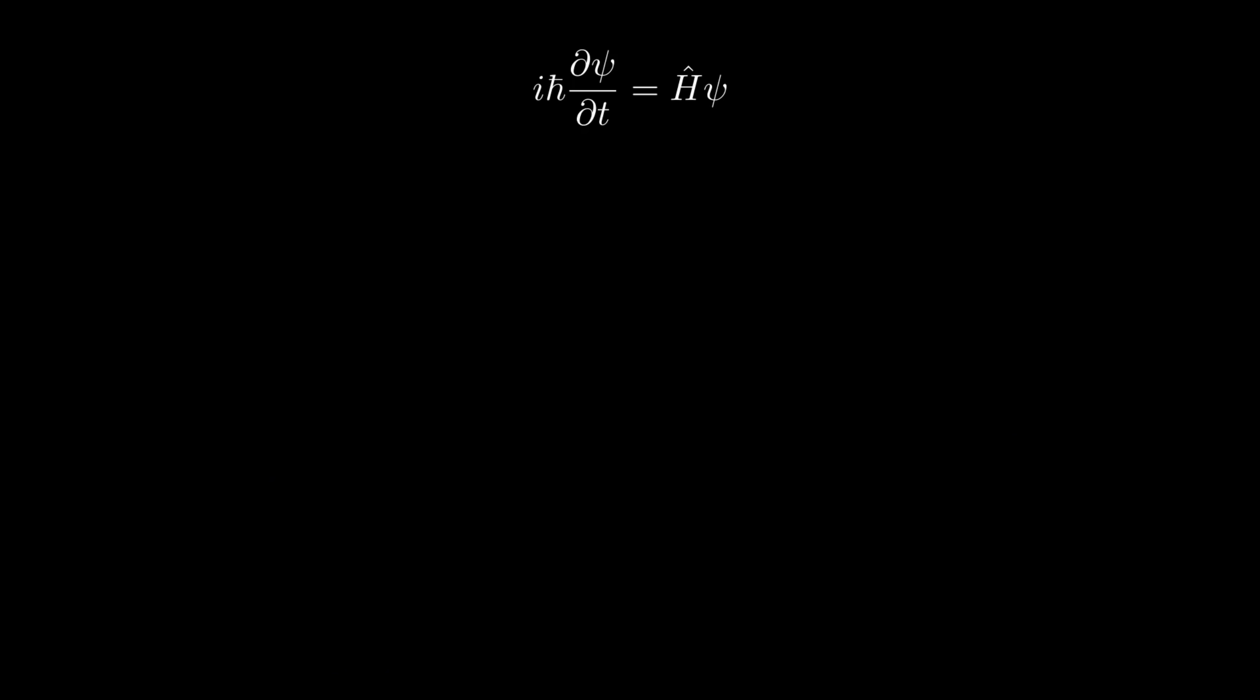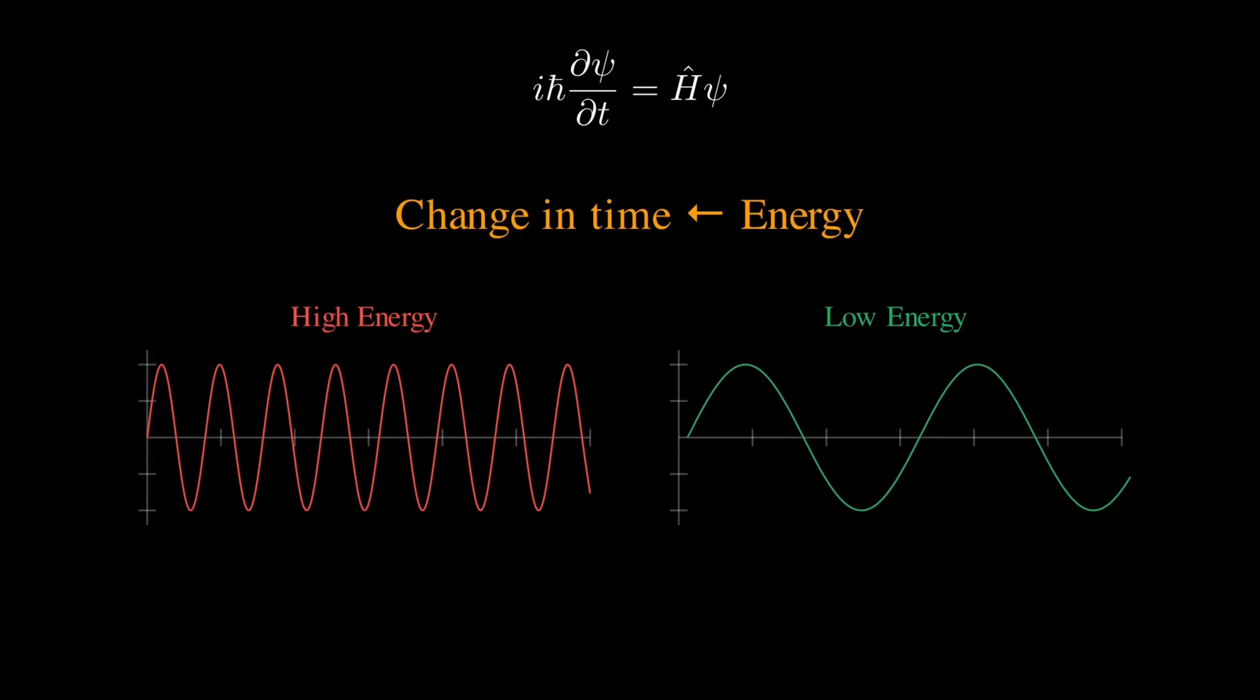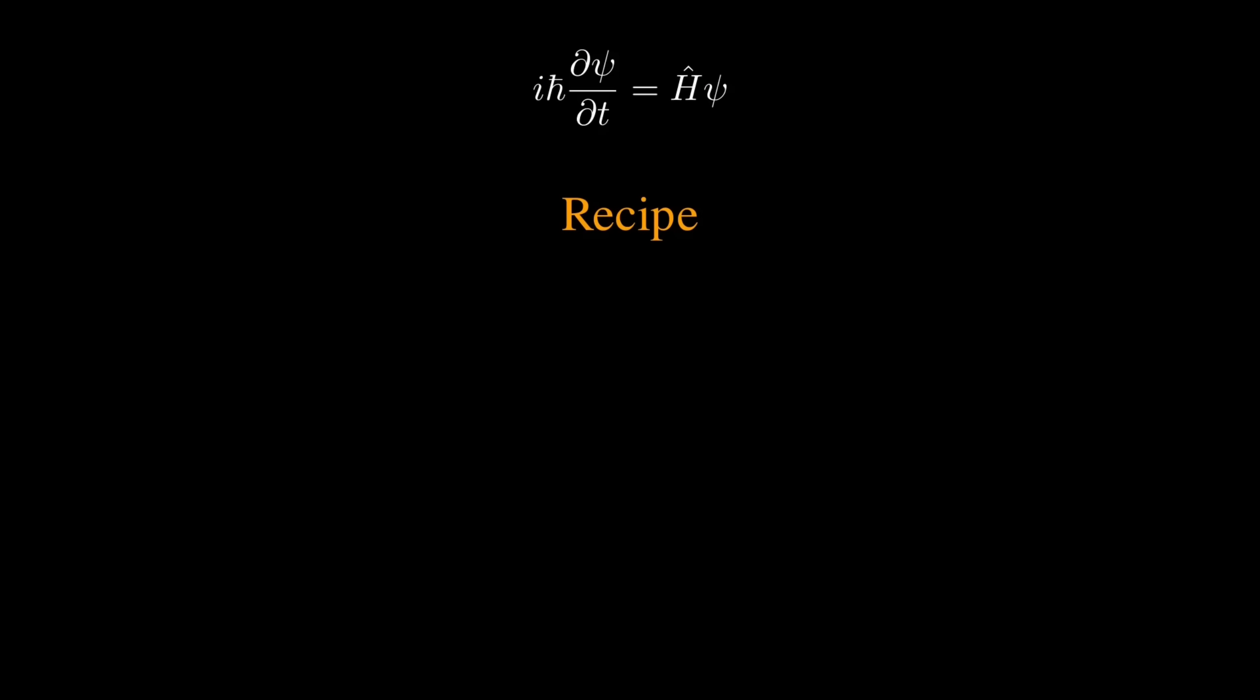So what is this equation really saying? It's telling us that the way a quantum state changes in time is entirely determined by its energy. High energy states oscillate rapidly. Low energy states change slowly. The Schrödinger equation is like a recipe: give me the wave function now, tell me the energies involved, and I'll tell you what the wave function will be at any future time.